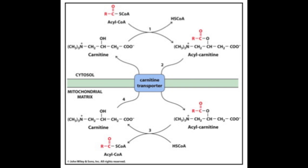Acyl-CoA is transported into the mitochondrial matrix by a carnitine transporter. Once it's inside the mitochondrial matrix, beta oxidation can begin.